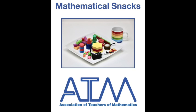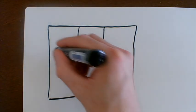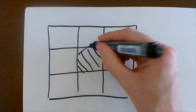This is a mathematical snack from the Association of Teachers of Mathematics for you to enjoy. There is a farmer who lives in a field. So he lives slap bang in the middle of eight fields. So there's his house there.